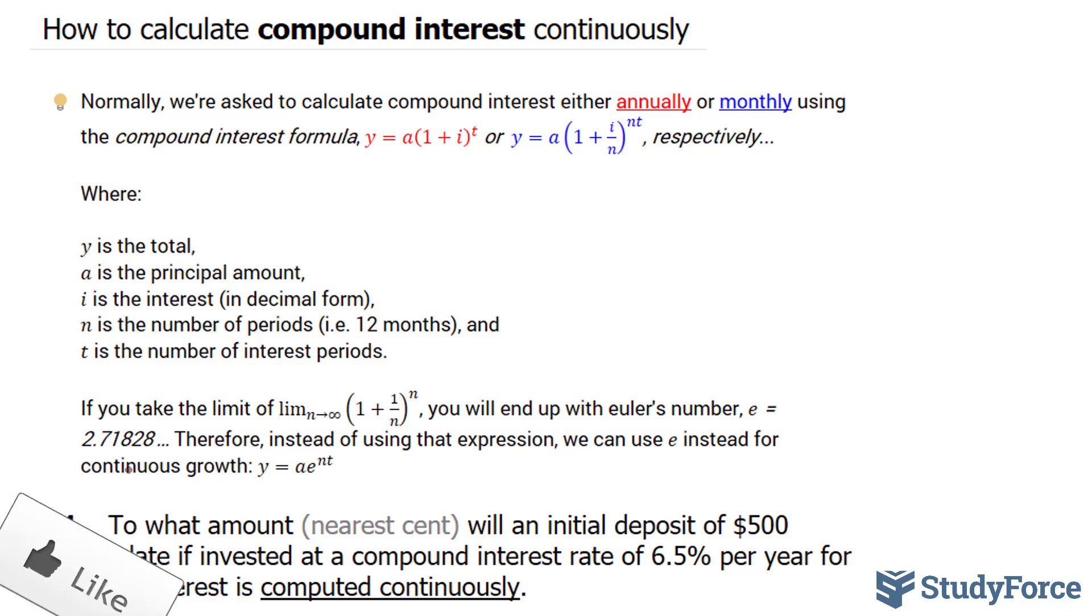And this special number is denoted with the letter e. Therefore, instead of using that expression, when it comes to compounding something continuously, we can use e instead for continuous growth, making this equation look like this.